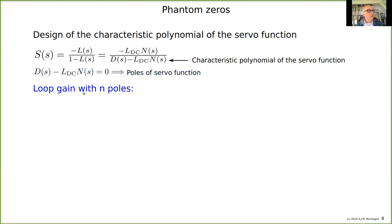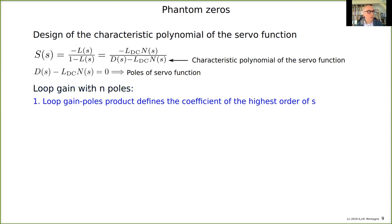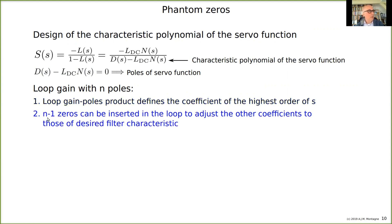Let's consider a loop gain with a number of poles and see what happens. The loop gain pole product, which we have already seen in the previous lecture, defines the coefficients of the highest order of s, and the n minus one zeros can be inserted in the loop to adjust all the other coefficients to those desired filter characteristics. This will be shown later in an example for a second order system.